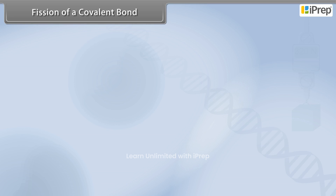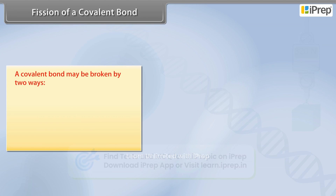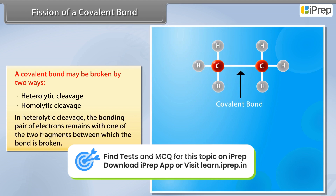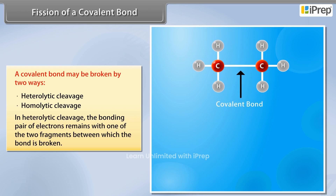Fission of a covalent bond: A covalent bond may be broken in two ways — heterolytic cleavage and homolytic cleavage. In heterolytic cleavage, the bonding pair of electrons remains with one of the two fragments between which the bond is broken.